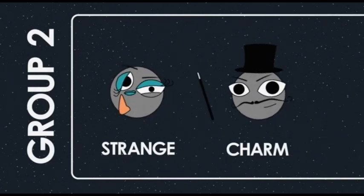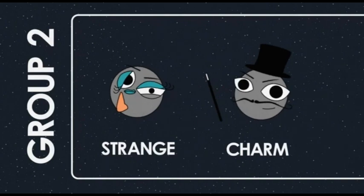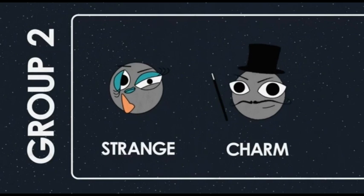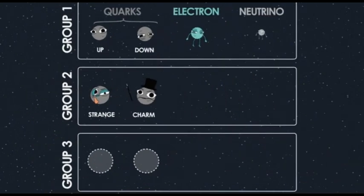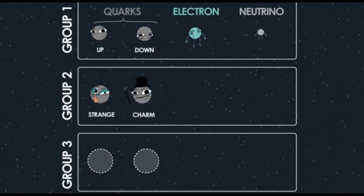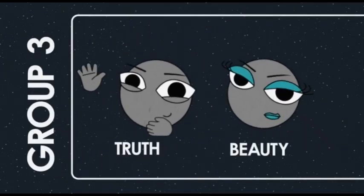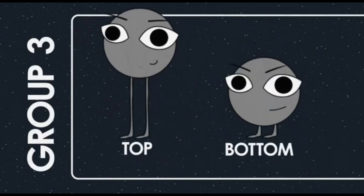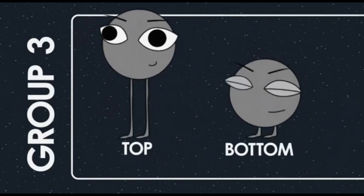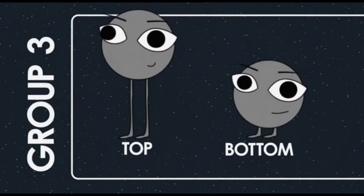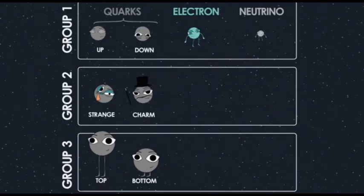Why are they called strange and charmed? These names have very little to do with any properties of the particles — they're just given these names so we can keep track of them, which hints at how complicated this gets. There are three pairs of quarks: up and down, strange and charm, and the third pair was originally called the truth and beauty quarks, but now we call them the top and bottom quarks.